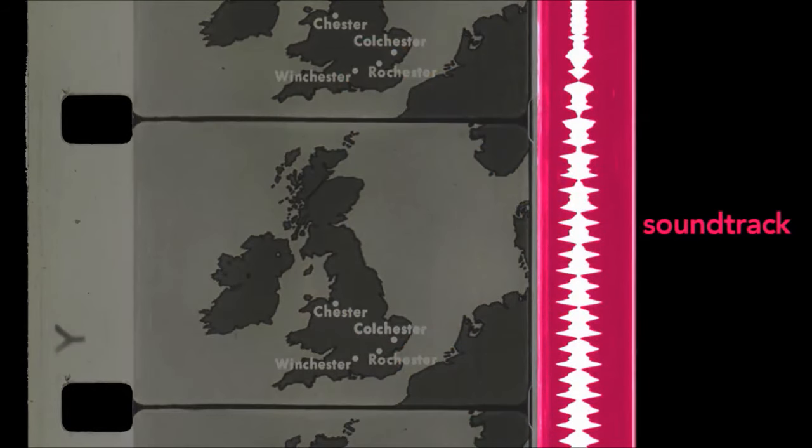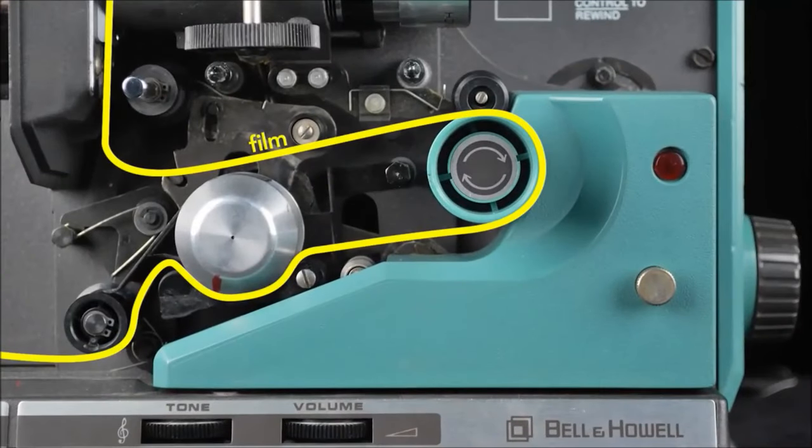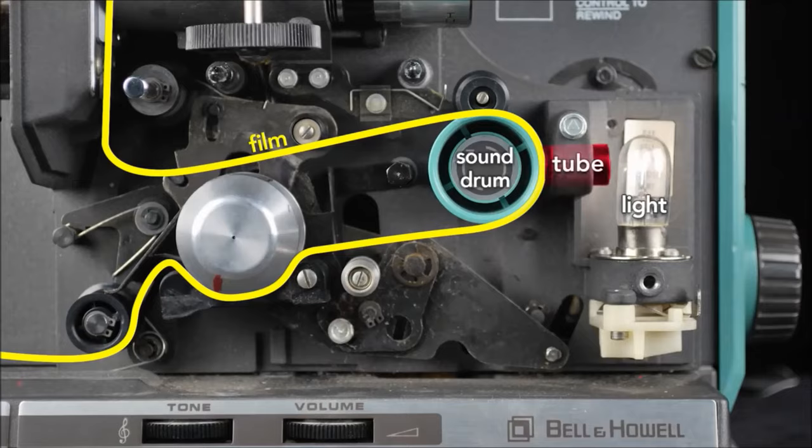Sound in movies is recorded optically on the edge of the film. After the film runs past the lamp, it runs across the sound drum. To read this optical soundtrack, light shines through a tube with a slit. This concentrates the light on a small section of the film's soundtrack.